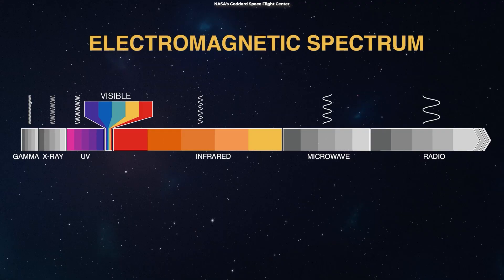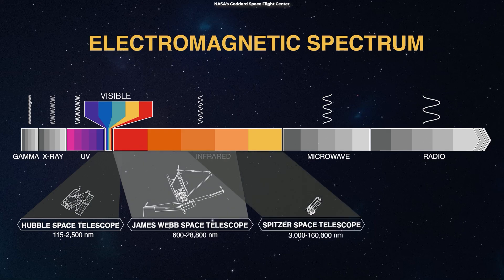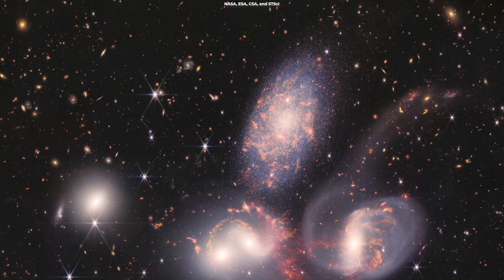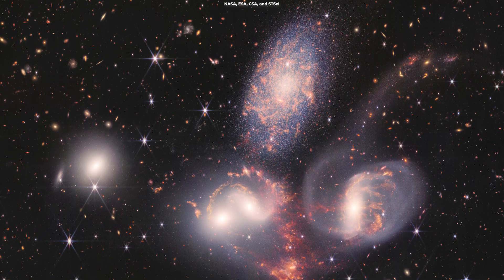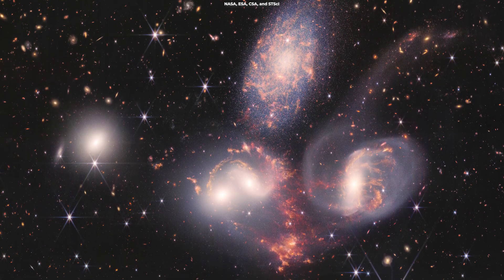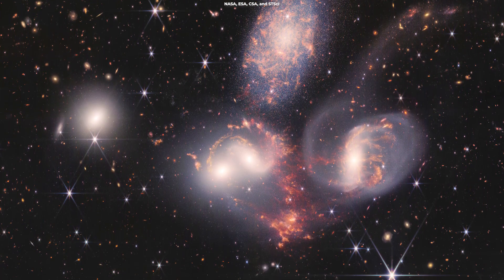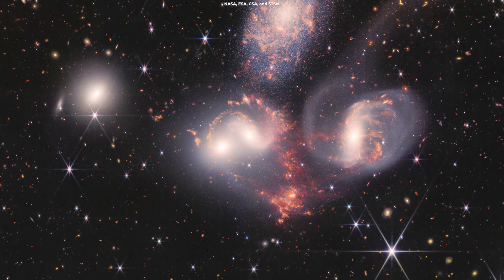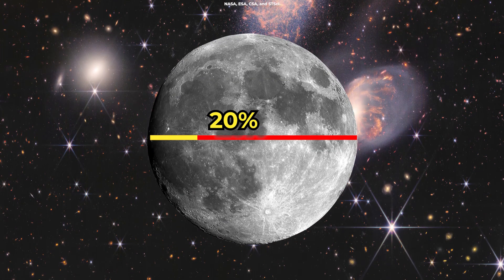Thanks to its mid-infrared instrument, Webb can pierce through dust, giving new insight into how interactions like these may have driven galaxy evolution in the early universe. This enormous mosaic is Webb's largest image to date, covering about one-fifth of the moon's diameter.